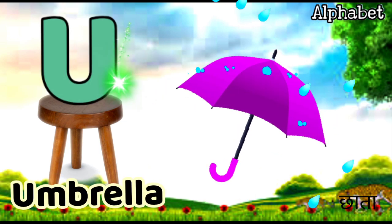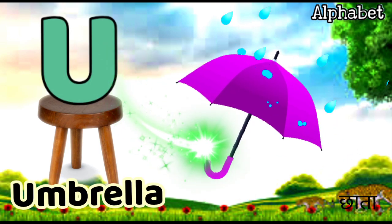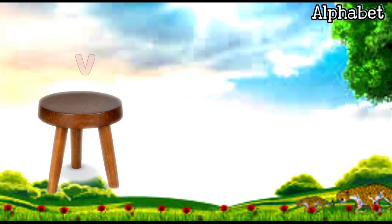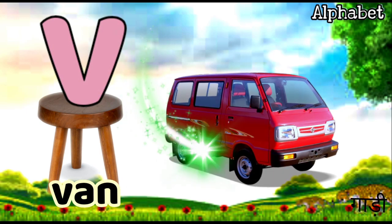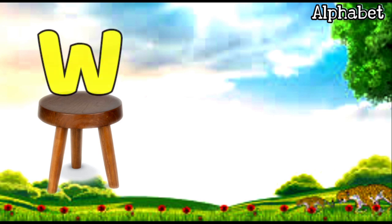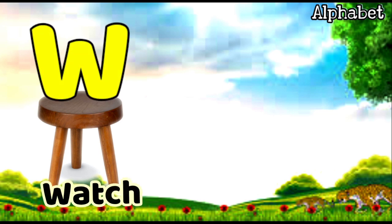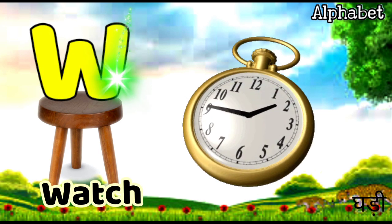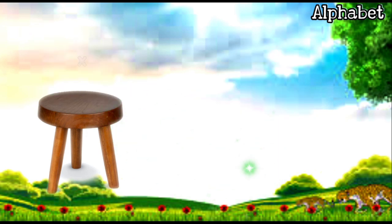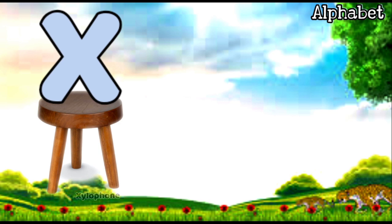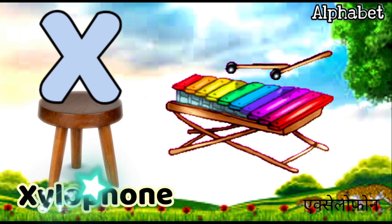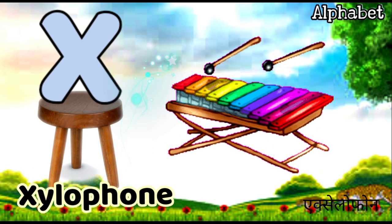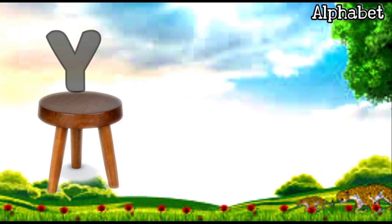U for umbrella, V for van, W for watch, X for gylo phone.